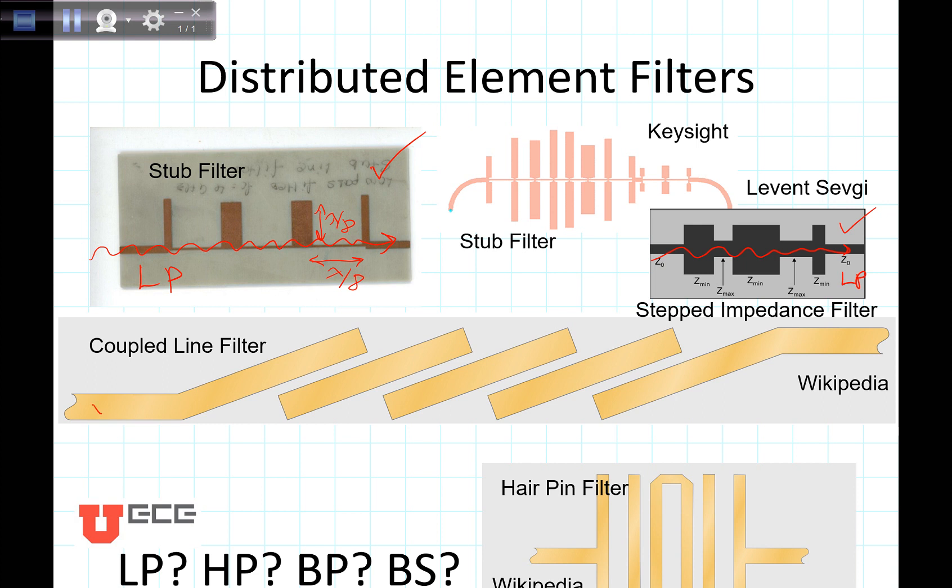But if I tried to send a low frequency signal through this coupled line, right there it wouldn't be able to make it. So a coupled line filter cannot be used for low pass, and as you can imagine, also the hairpin filter cannot be used for a low pass design.